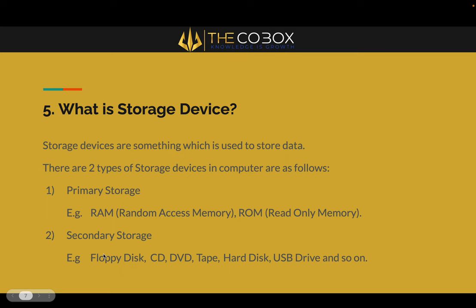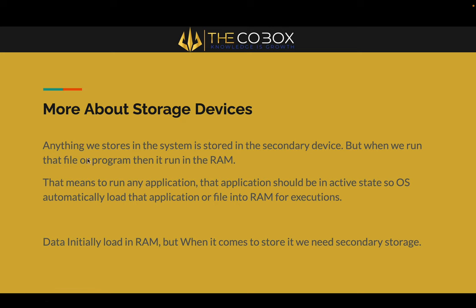Now let's go into more detail on storage devices. Anything we store in the system — video, image, text — is stored in a secondary device. But if you want to execute or open a file, that execution happens in the RAM. That is the main work of RAM. Even if you are running a small program like 'Hello World,' it will execute in RAM only. So whatever action we are watching on the screen is happening in RAM.